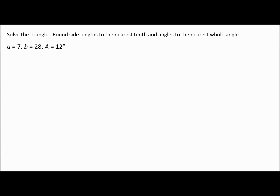For the next problem, we're solving a triangle, rounding side lengths to the nearest tenth and angles to the nearest whole degree. First I check: do I know two angles? No — only angle A is 12 degrees. Next: do I have a side and the angle directly across from it? Yes — I have both A's, side a and angle A. So I can use law of sines.